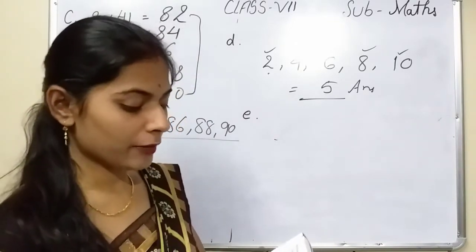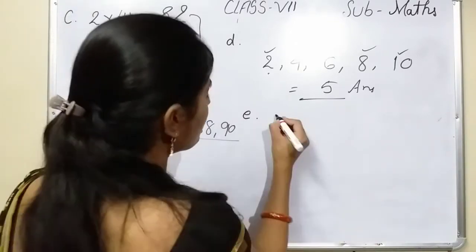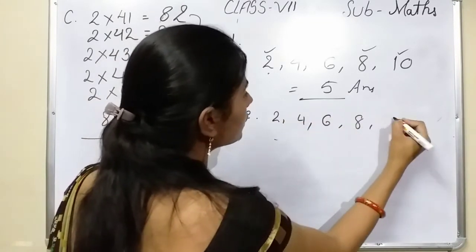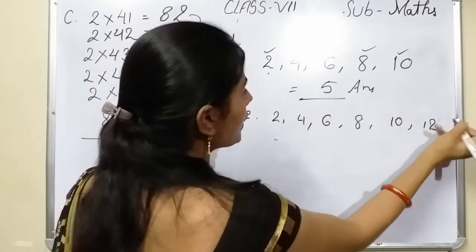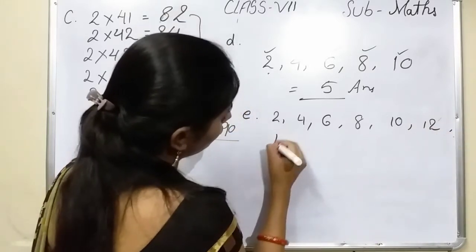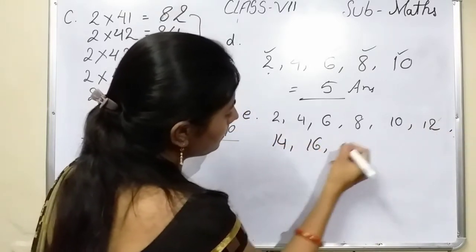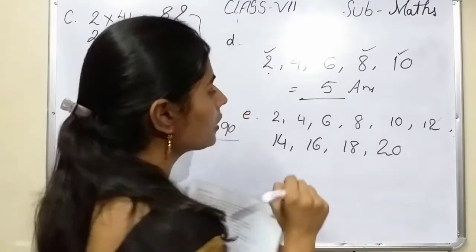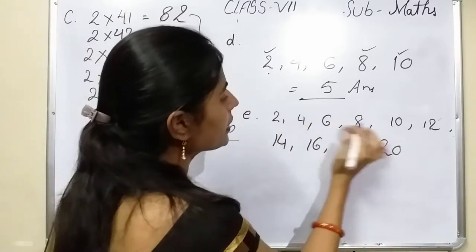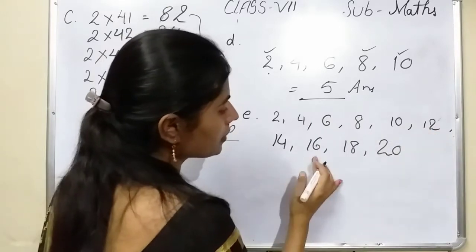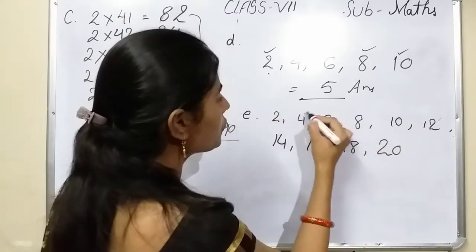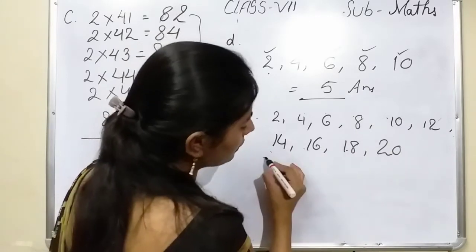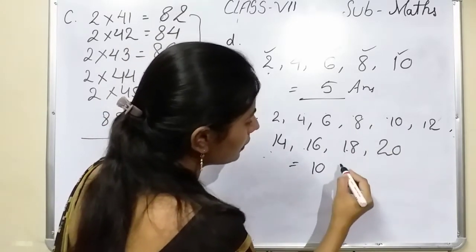Now how many even numbers are there between 1 and 20? The even numbers are 2, 4, 6, 8, 10, 12, 14, 16, 18, and 20 — 20 must also be included. Counting them: 1, 2, 3, 4, 5, 6, 7, 8, 9, and 10. So there are 10 even numbers between 1 and 20.